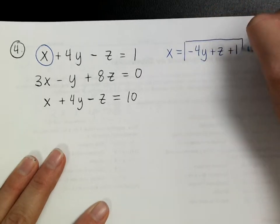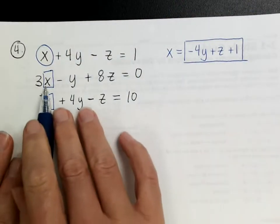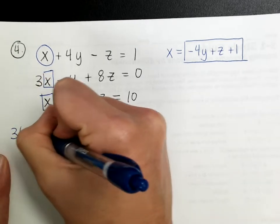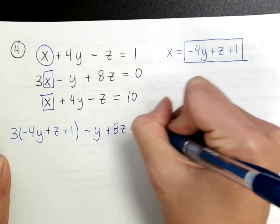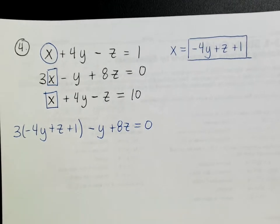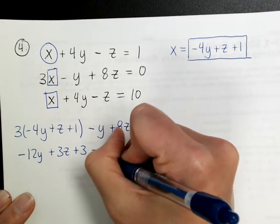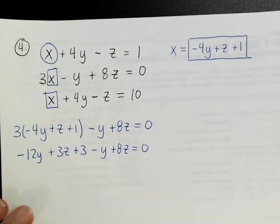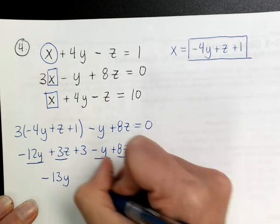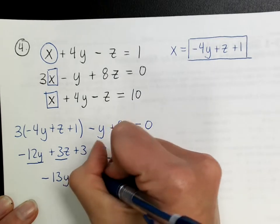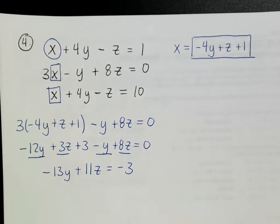I'll substitute x into both other equations. Plugging into the first equation: 3(negative 4y + z + 1) minus y + 8z = 0. Distributing gives negative 12y + 3z + 3 minus y + 8z = 0. Combining like terms: negative 13y + 11z = negative 3.